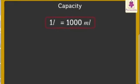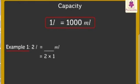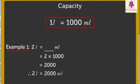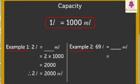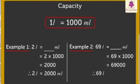Now we will see how to convert litre into millilitre. Let's take one example. Example 1: Convert 2 litres into millilitres. As we know, 1 litre equals 1000 millilitres, so 2 multiplied by 1000 is equal to 2000 millilitres. So our 2 litres is equal to 2000 millilitres. Let's take one more example: convert 69 litres into millilitres. 69 multiplied by 1000 is 69000 millilitres. So 69 litres is equal to 69000 millilitres.